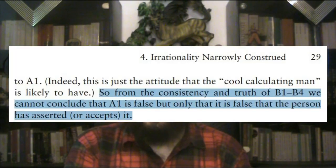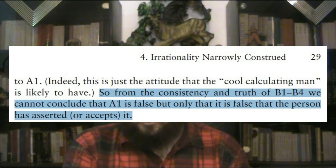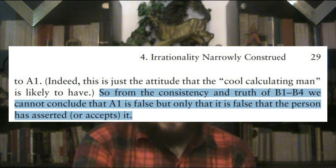Given that we lack that information, we cannot assert that John is irrational. Therefore according to Scanlon, the cool-calculating man may not be acting irrationally in this specific sense, even if he is not acting morally. Scanlon emphasizes a distinction between recognizing a reason and actively accepting it. From the consistency and truth of B1 to B4, we cannot conclude that A1 is false, but only that it is false that the person has asserted or accepts it. So that John needs to be moral, and that he has no reason not to donate, and that he did not donate, and that he is therefore rational — that doesn't mean that he assented or accepted A1, that he has reason to do it.